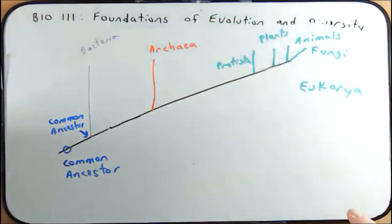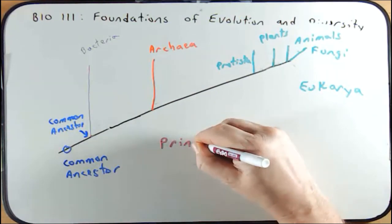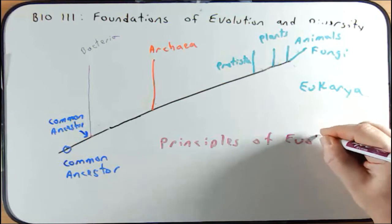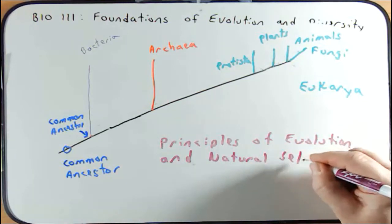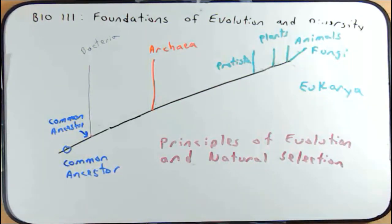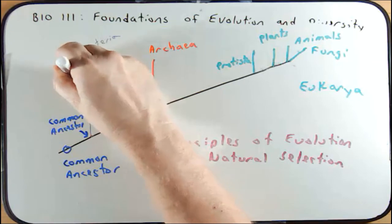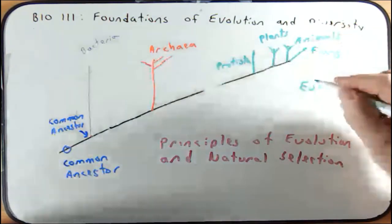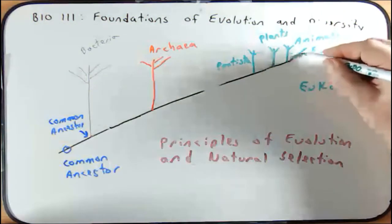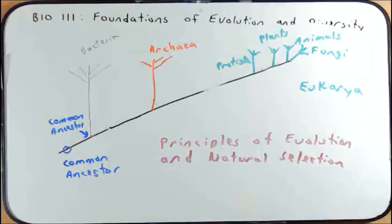But how did this diversification occur? That's what we're going to spend the first part of the course talking about — the principles of evolution and natural selection. How do these principles help explain the speciation that occurred at each of these levels? There are many branch points within each of these domains, and of course even further down, because we're not just all animals — we're different kinds of animals, different kinds of plants, different kinds of protistas, and same with fungi. All of this can be explained through the principles of evolution and natural selection.